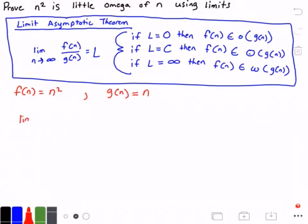We take the limit as n approaches infinity of f(n) divided by g(n), which equals the limit as n approaches infinity of n squared divided by n.